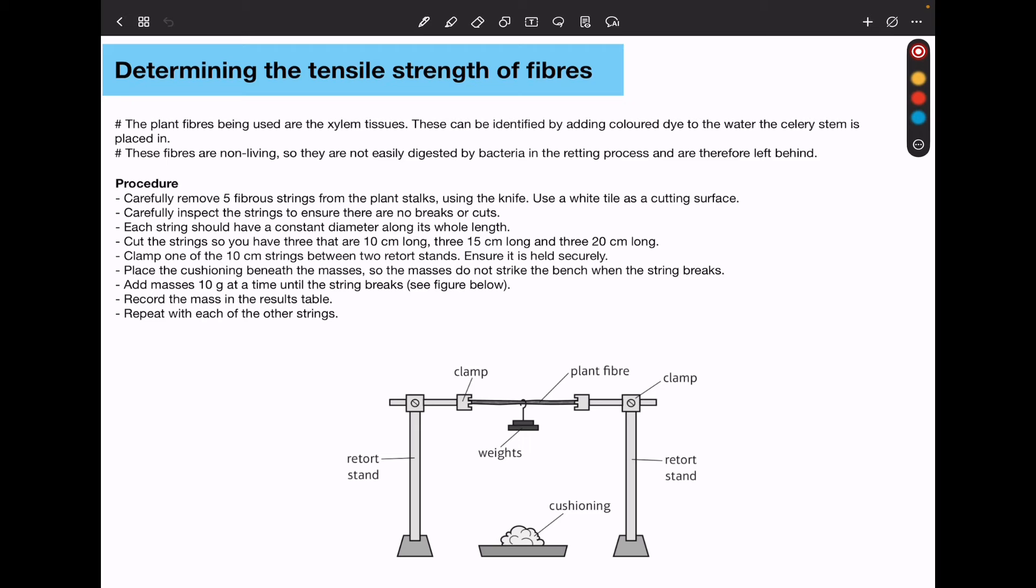You can clamp one of the 10 cm strings between two retort stands. We can see the retort stands here, and then the clamped fiber here. You have to make sure they're securely clamped, and then place the cushioning beneath the masses. In this case, we can see the cushioning here, so the masses do not strike the bench or the floor.